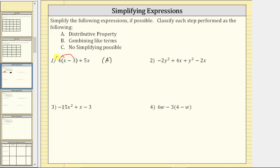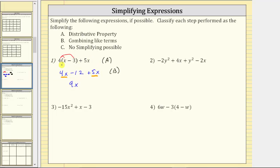Distributing the four: four times x is equal to four x. We can think of minus three as plus negative three, so we have four times negative three, which is negative 12 — written as minus 12. And then we have plus five x. The next step is to combine like terms. Four x and five x are like terms, so we classify this step as B. Four x plus five x is nine x. The expression simplifies to nine x minus 12.